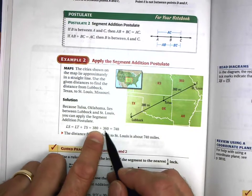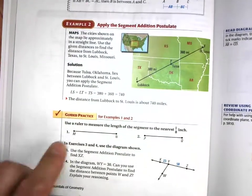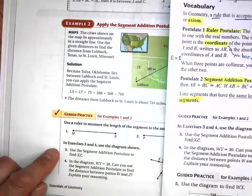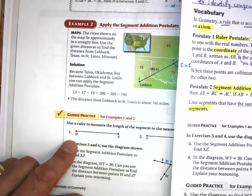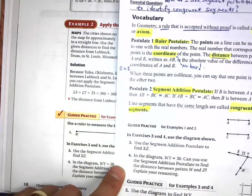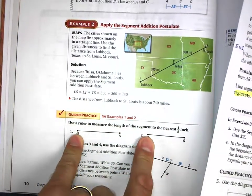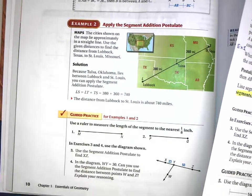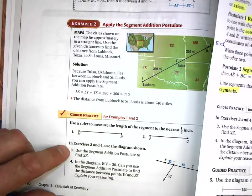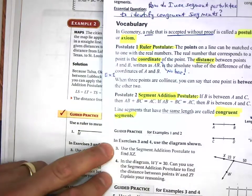Your turn: guided practice for 1 and 2. I did not include 1 and 2 because you may not have a ruler at home. We'll practice this in class. But you do have examples 3 and 4, so go ahead and pause the video.